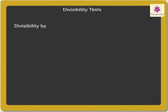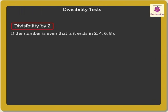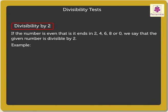Divisibility by 2. If the number is even, that is, it ends in 2, 4, 6, 8, or 0, we say that the given number is divisible by 2. For example, 26 ends in 6. Thus, it is divisible by 2.